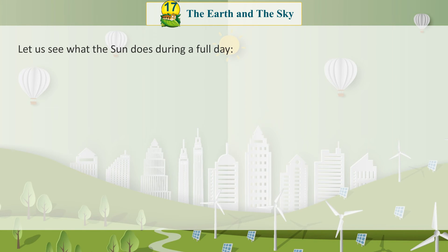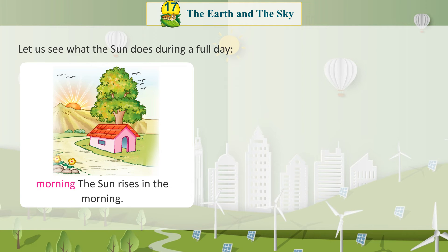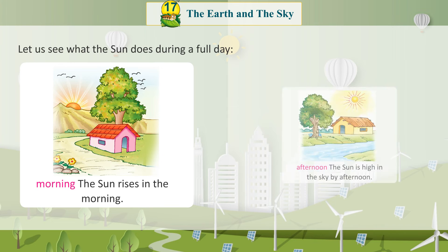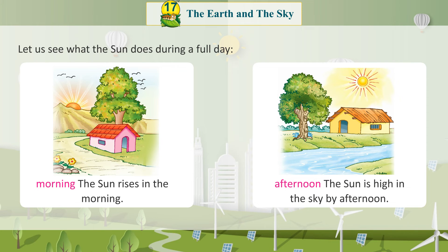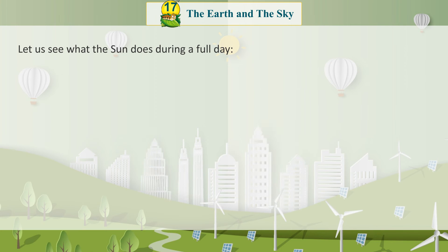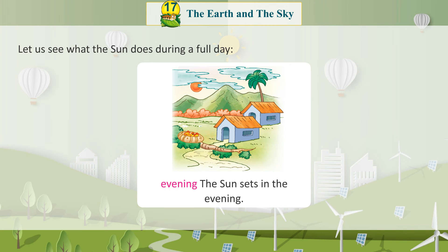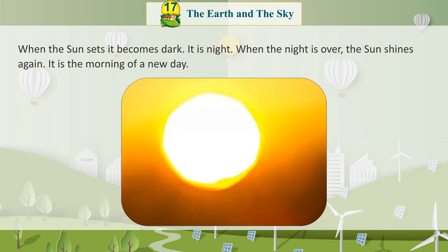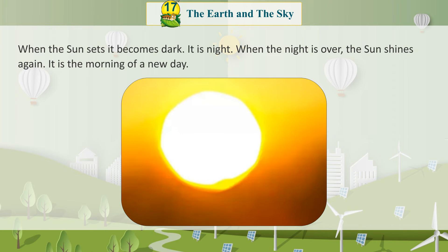Let us see what the sun does during a full day. The sun rises in the morning. By afternoon, the sun is high in the sky. The sun sets in the evening. When the sun sets, it becomes dark. It is night. When the night is over, the sun shines again. It is the morning of a new day.